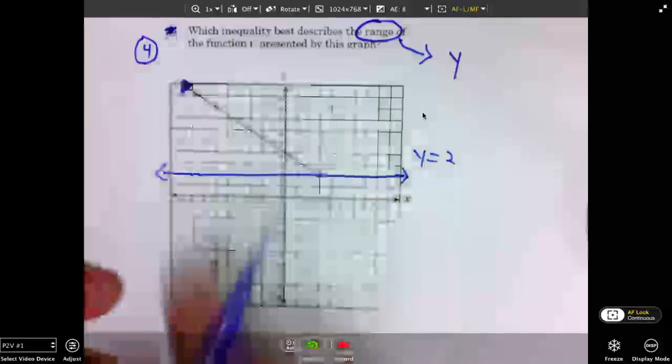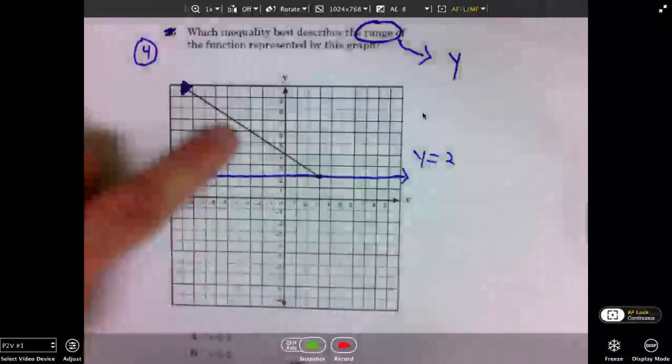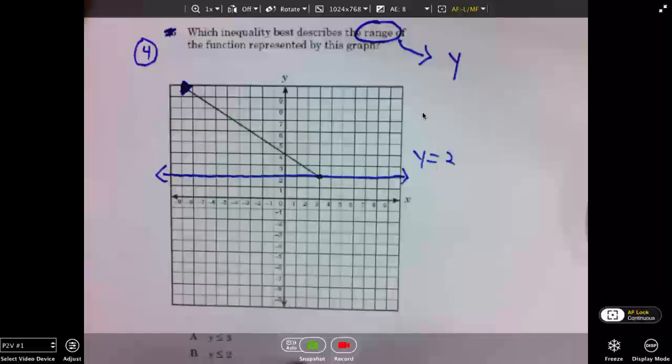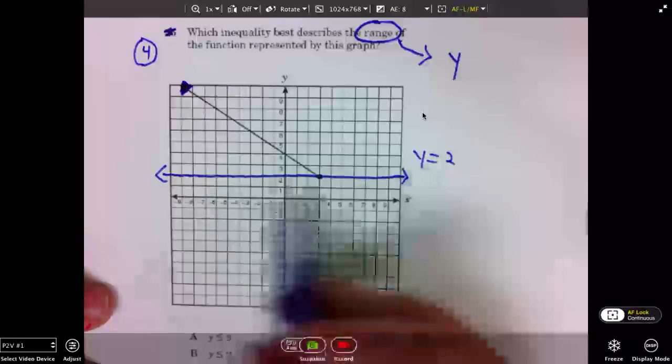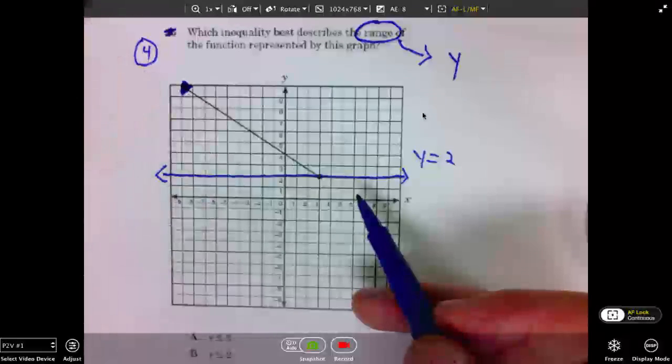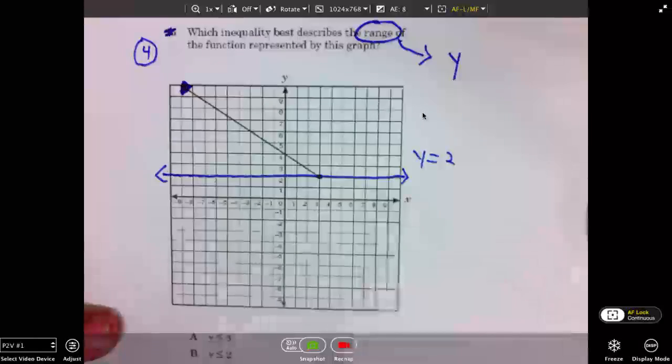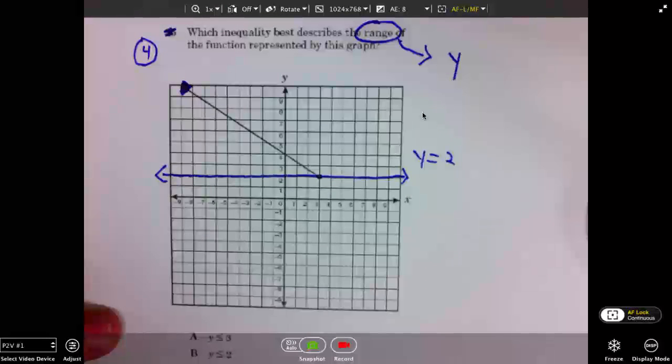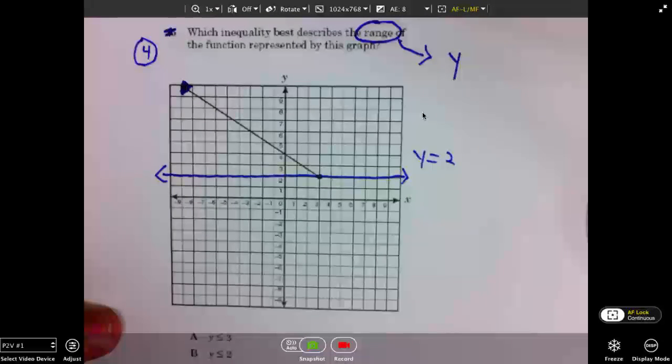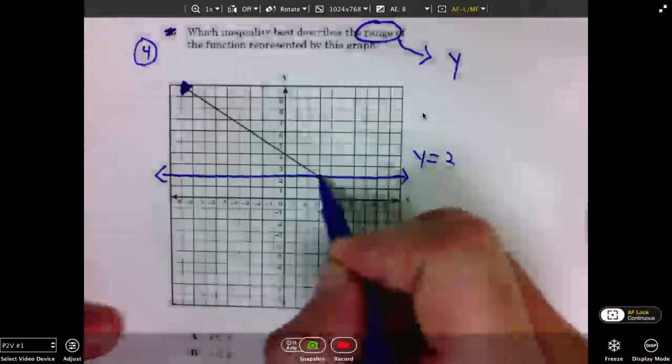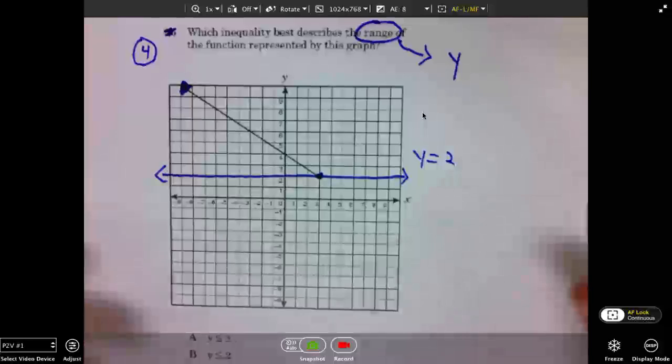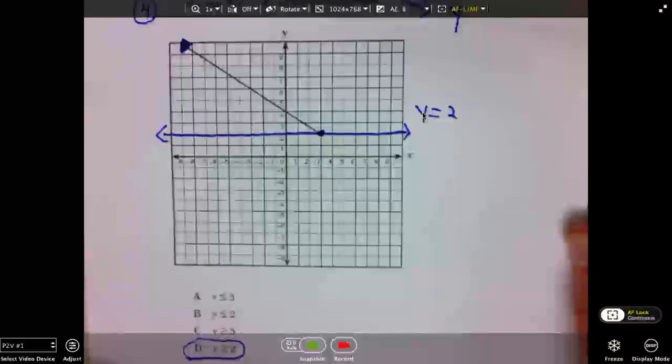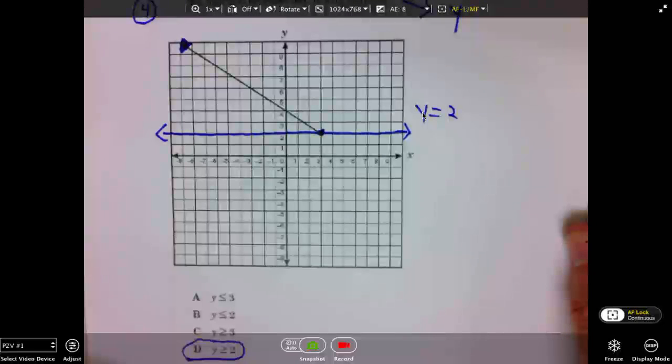This indicates that the line goes forever and ever, infinitely, in the positive direction. So, we're bounded on the bottom by a Y value of 2, but we're unbounded on the top. So, our range, all Ys that are greater than or equal to 2. Again, the colored in point indicates that we need the equal to. Number 4 is D.